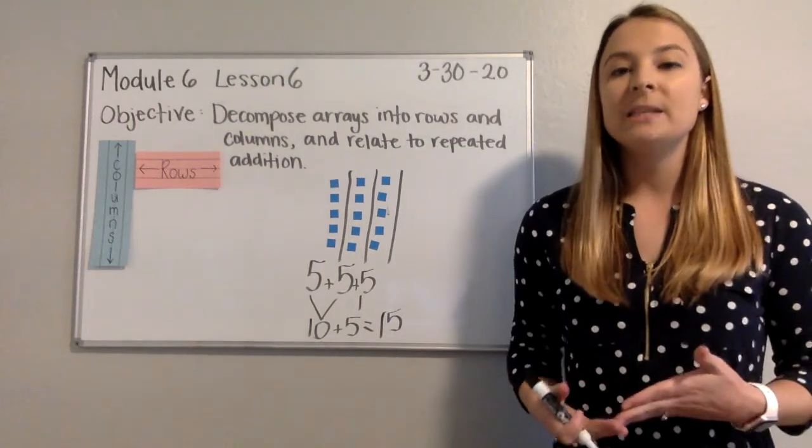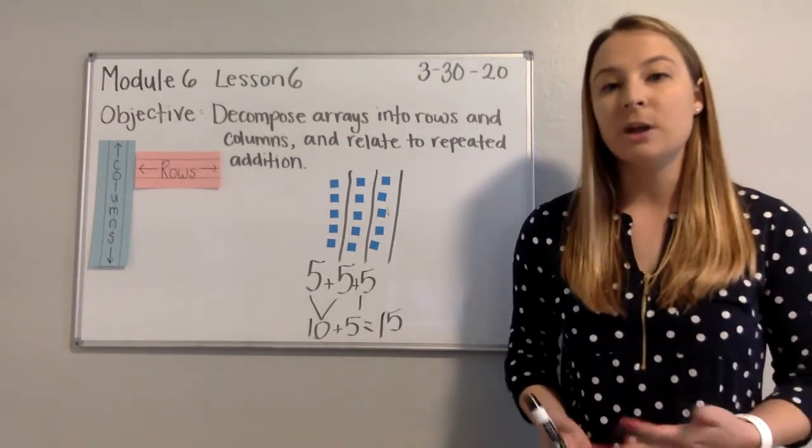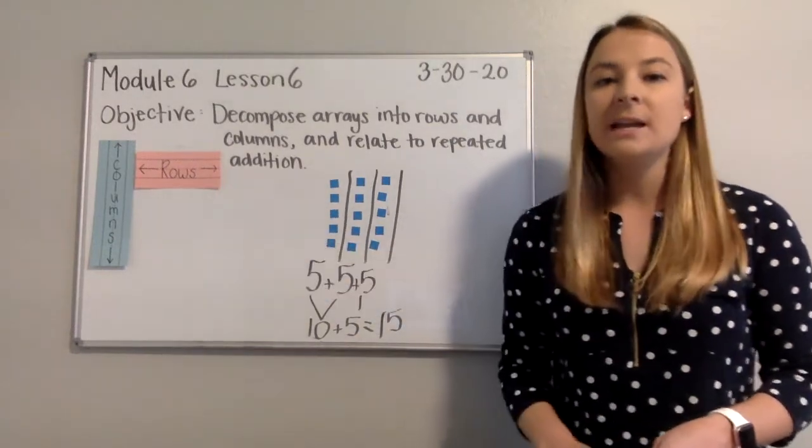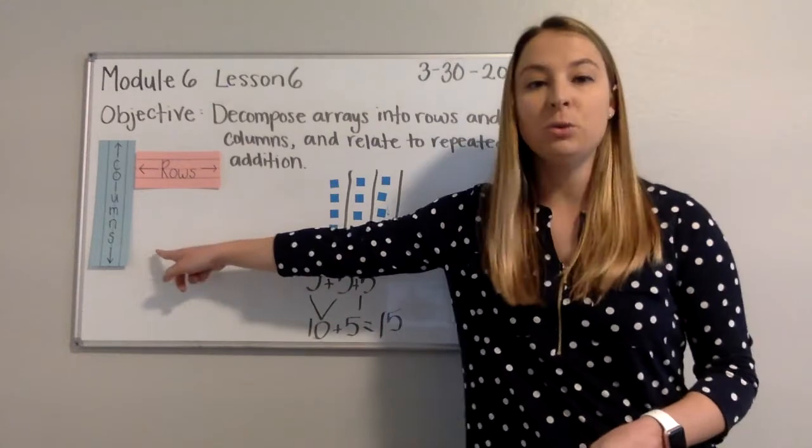So we did two examples of decomposing arrays. Our first example, we decomposed it into rows. And our second example, we decomposed it into columns.